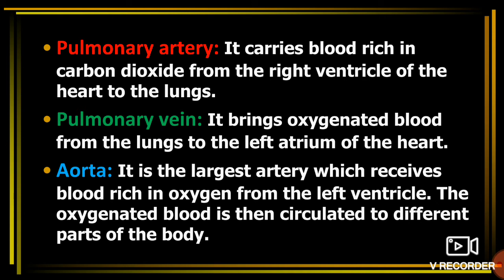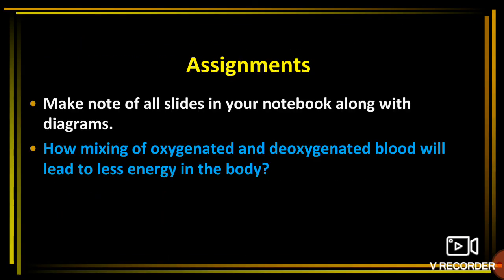To recap the exceptions: the pulmonary artery carries blood rich in carbon dioxide from the right ventricle of the heart to the lungs, whereas the pulmonary vein brings oxygenated blood from the lungs to the left atrium of the heart. The aorta is the largest artery, which receives oxygen-rich blood from the left ventricle and circulates it to different parts of the body. The superior and inferior vena cava collect deoxygenated blood from the entire body and bring it back to the heart.